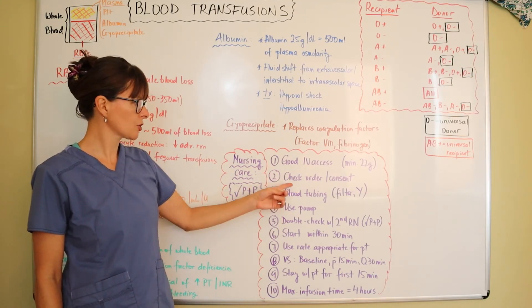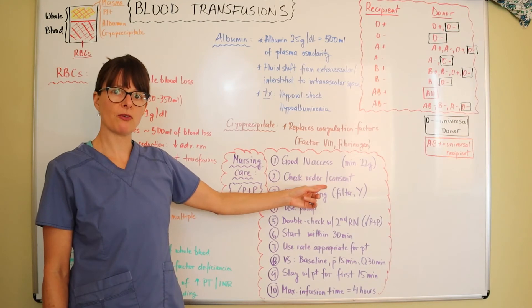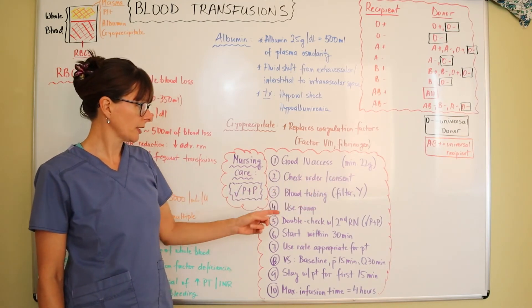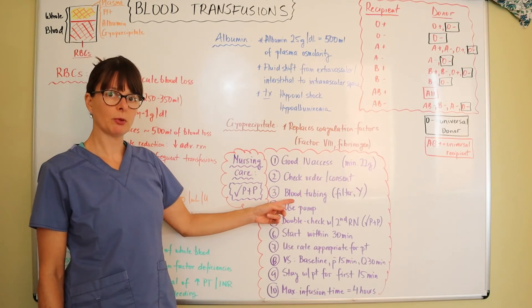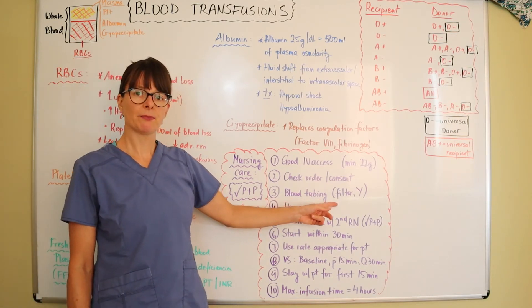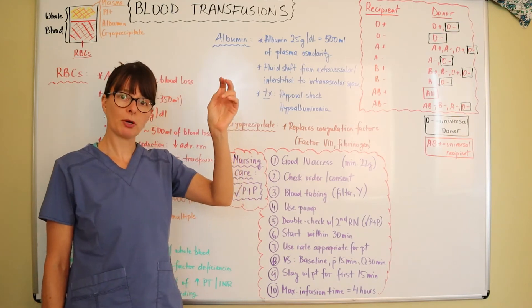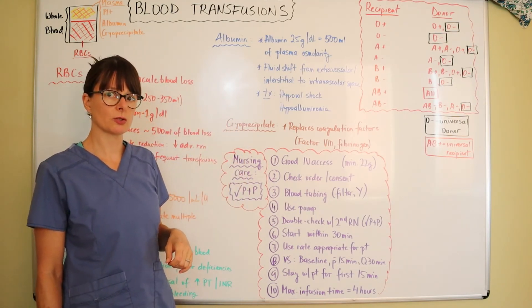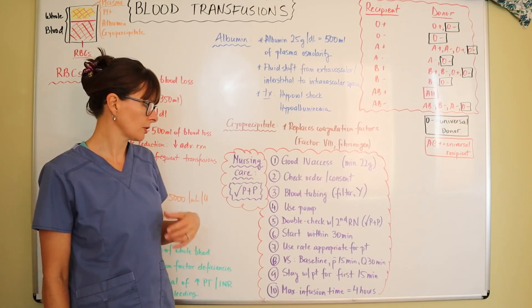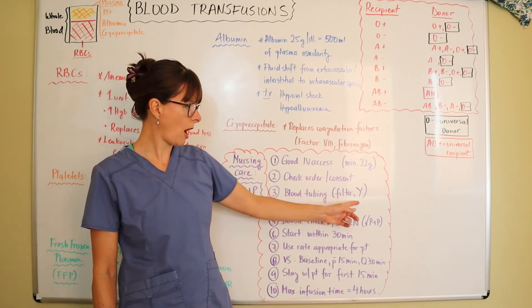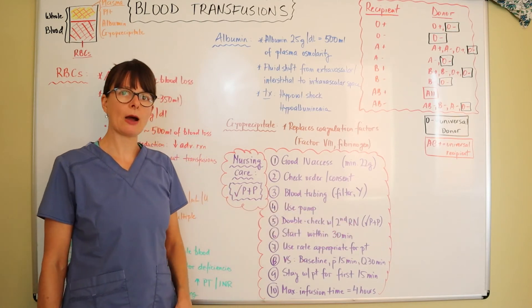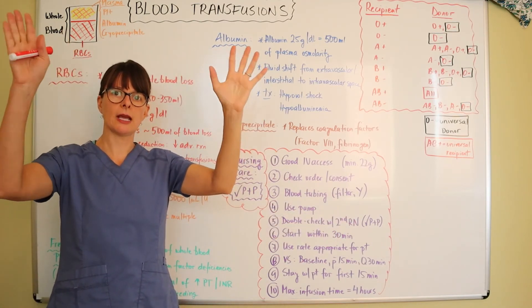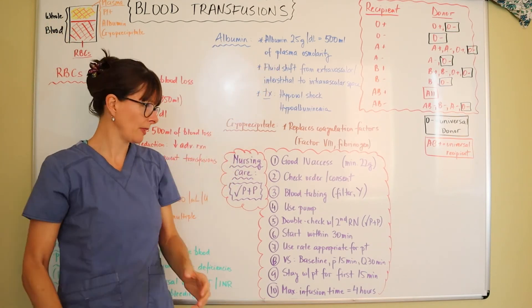We want to check the order and make sure that the physician or provider has consented the patient for the blood transfusion. There's specific blood tubing available and the reason is that it has a filter because certain particles might get caught there and we don't want to infuse those into the patient's vein. It also has a wide tubing which will allow you to hang the blood bag as well as the normal saline at the same height.